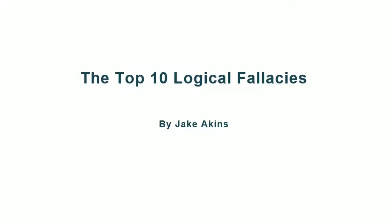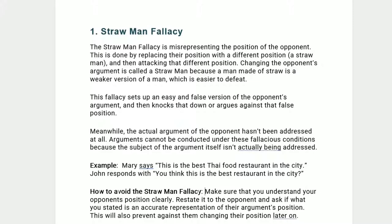First, the straw man fallacy. The straw man fallacy is misrepresenting the position of the opponent. This is done by replacing their position with a different position — a straw man — and then attacking that different position. A man made of straw is a weaker version of a man, easier to defeat. This fallacy sets up an easy and false version of the opponent's argument and knocks it down, while the actual argument of the opponent hasn't been addressed at all.